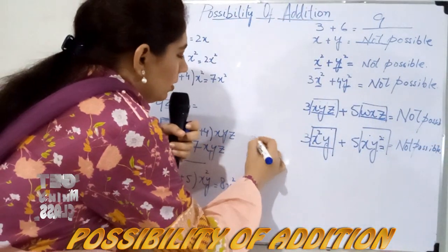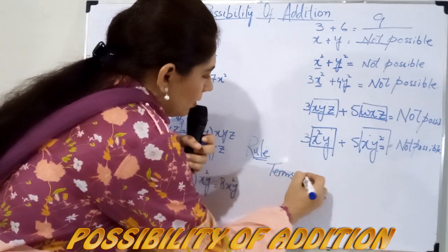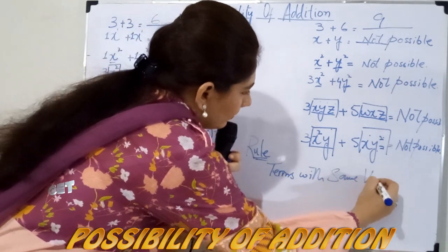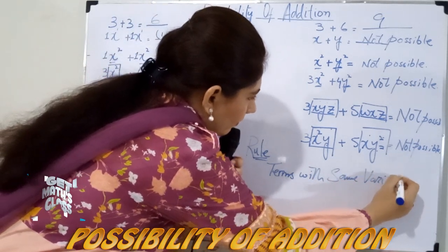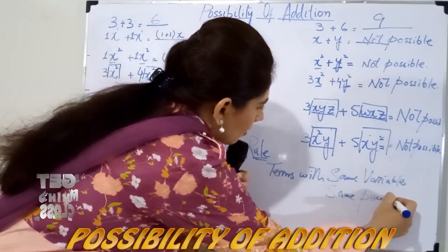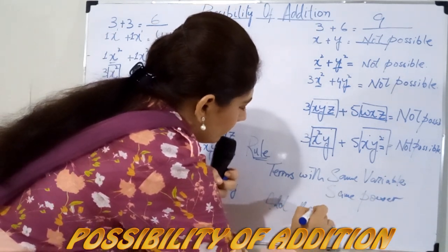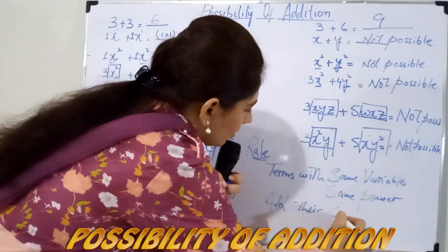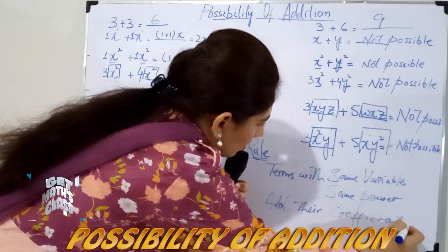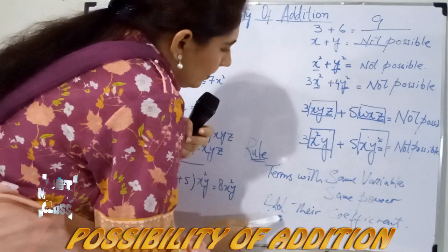There is a rule: terms with the same variable and the same power — simply add their coefficients.